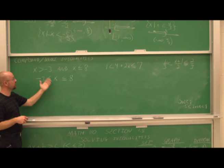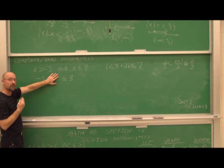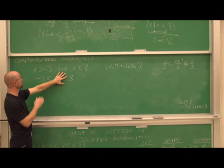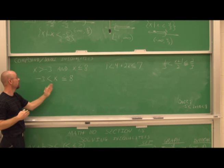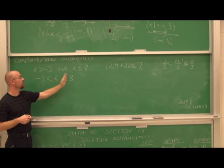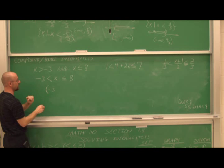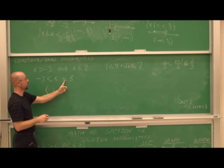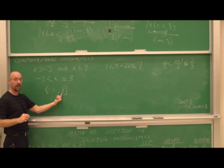To check a compound inequality is in proper form, cover up the x and one symbol: is negative 3 less than or equal to 8? Yes, true. Is negative 3 less than 8? True. Both statements must hold. Compound inequalities are always written from least to greatest, just like interval notation. In interval notation: parenthesis at negative 3 since not included, bracket at 8 since included — x lies between negative 3 and 8.